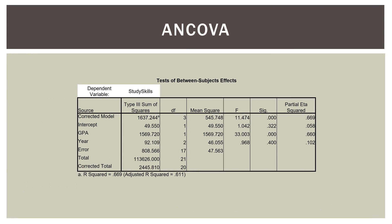Now let's look at our ANCOVA with the GPA covariate. Our F value is now 11.474 and our significance value is .000, or just less than .001 — so the model is now significant. Look at our error sum of squares: now it's 808. Our total sum of squares is the same. Just because we introduced the covariate, our total sum of squares does not change — what changes is how we allocate those sum of squares. The error term is now 808.566.